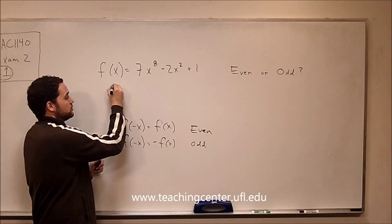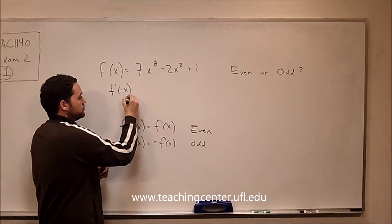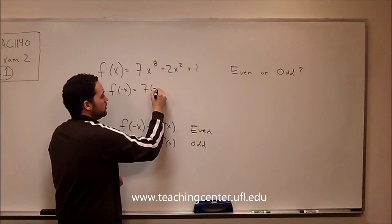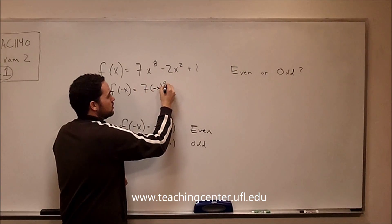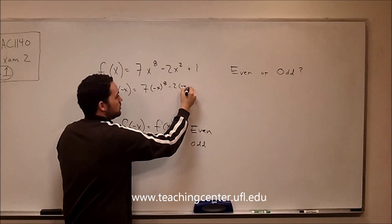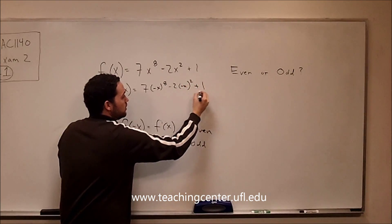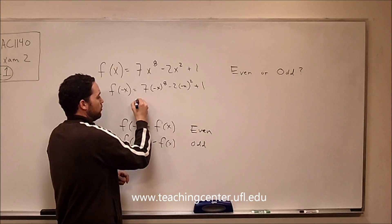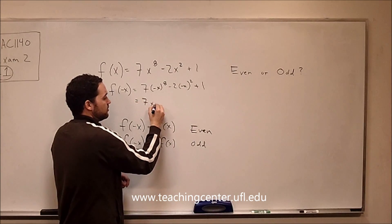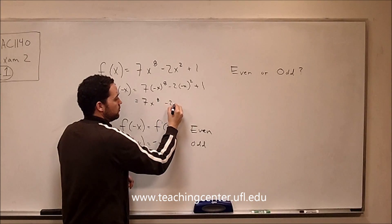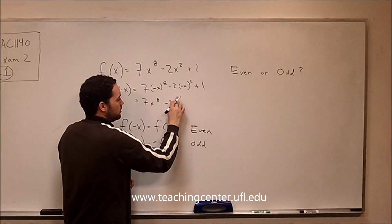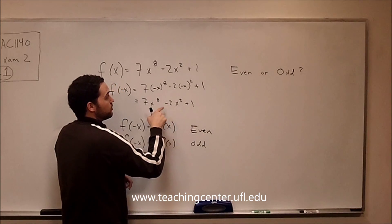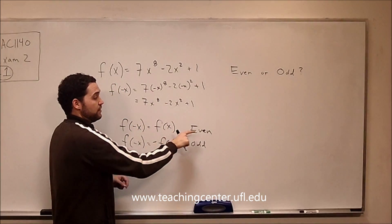So in this example we go ahead and plug negative x in for all the x's. Anything raised to an even power will perfectly cancel out the negatives, so this is just going to be 7x to the 8th minus 2x squared plus 1. We can see it's identical to the original, so therefore it must be an even function.